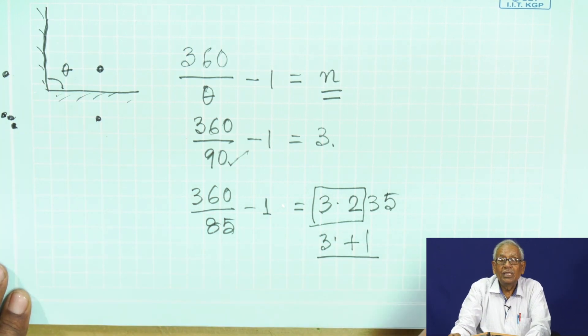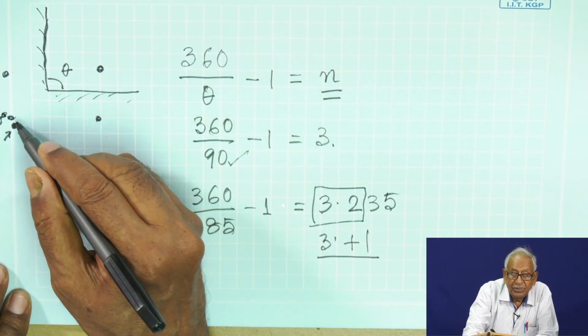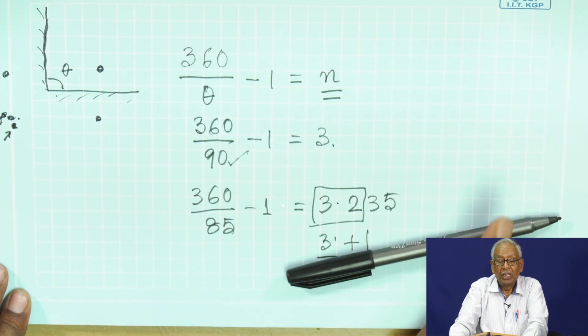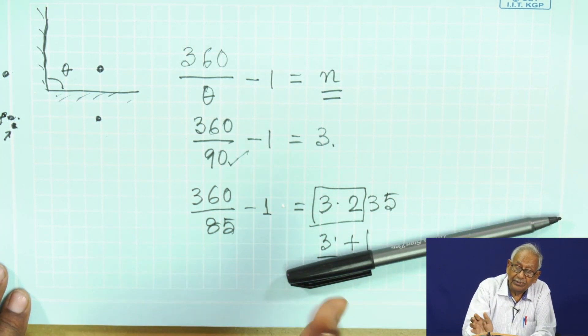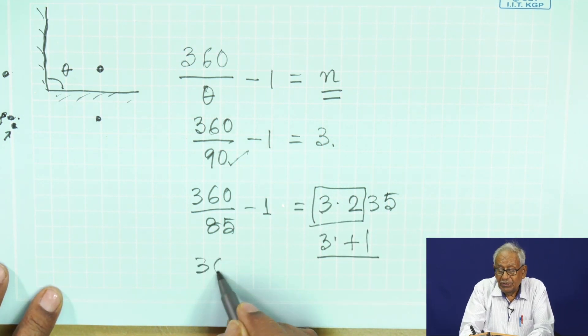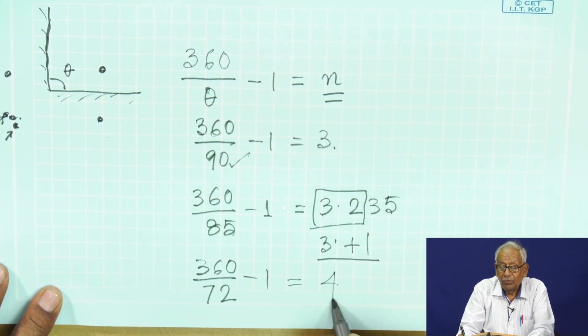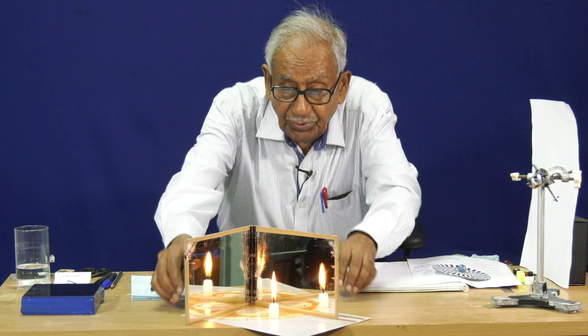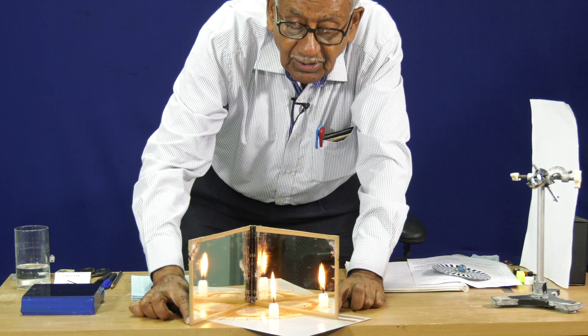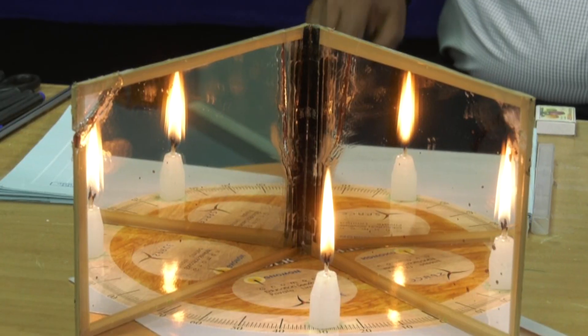That means you are still looking at 4 images instead of 3. This has been separated. Now, if I move further to 72 degrees, that means 360 divided by 72 minus 1 gives you 4. If I move it to 72 degrees, you will clearly see 4 images.